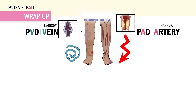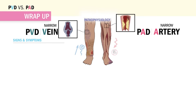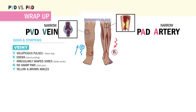For our signs and symptoms, let's use our acronyms. For PVD, our vein problem, we use the acronym VEINY. V for voluptuous pulses and warm legs. E for edema. I for irregularly shaped sores. N for no sharp pain — more of a dull pain because we have oxygen. Y is for yellow and brown ankles — remember the ankles.